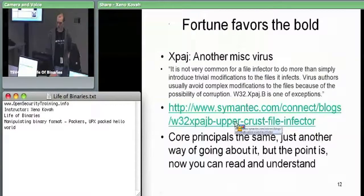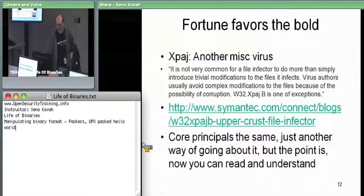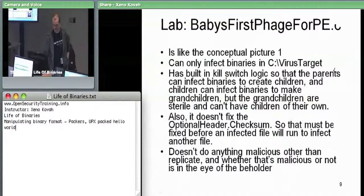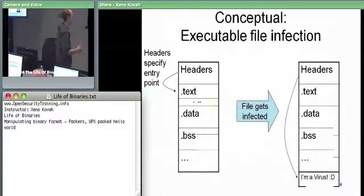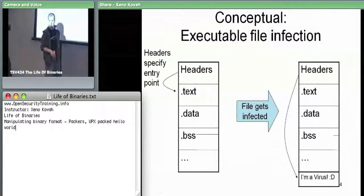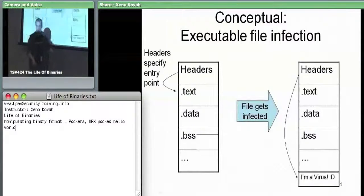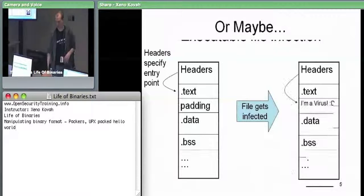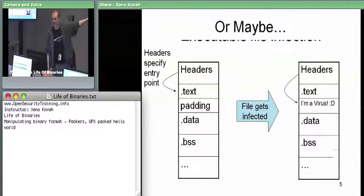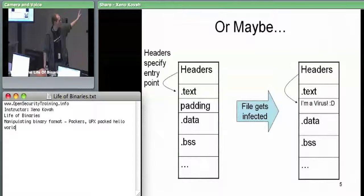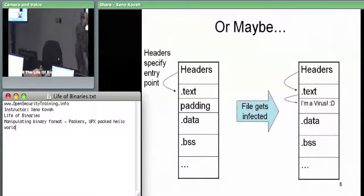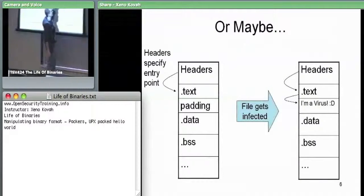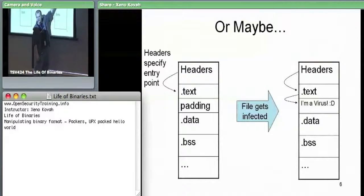This one is interesting because there are a variety of different ways that the virus can get its code to run. Two basic approaches: A, it modifies the PE headers to point directly to itself, or B, it lets the PE headers stay exactly where they were but takes the very first instruction at that location and puts a jump to the virus code.